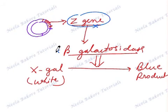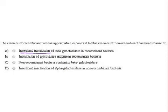White will not change into blue product. So our question is regarding what will happen with the recombinant bacteria. Recombinant bacteria is the one where the Z gene has been inactivated.